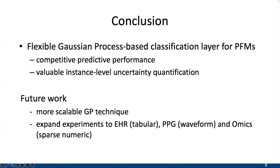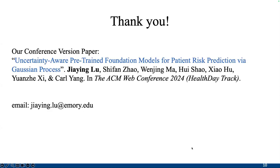In conclusion, our Gaussian Process can provide competitive prediction performance compared to the traditional fully connected layer, and it can also provide valuable instance-level uncertainty quantification results. In the future, we want to explore more scalable GP techniques, such as a nearest-neighbor-based GP, because GP is a non-parametric model and can be computationally expensive. We also want to expand experiments to EHR, PPG, and omics data, which represent more diverse data modalities. Thank you to my collaborators, and feel free to reach out with any questions.